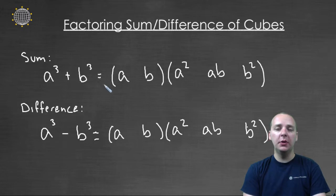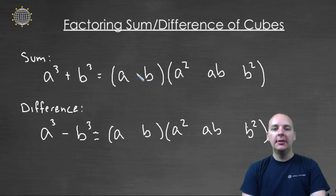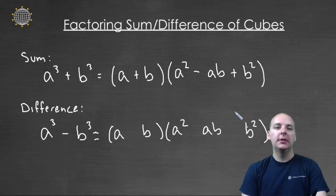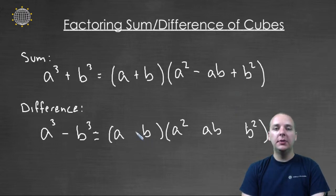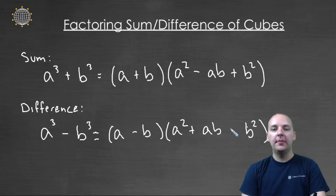For a sum of cubes, the signs go: plus, minus, and then plus. And for a difference of cubes, it's a minus, a plus, and a plus.